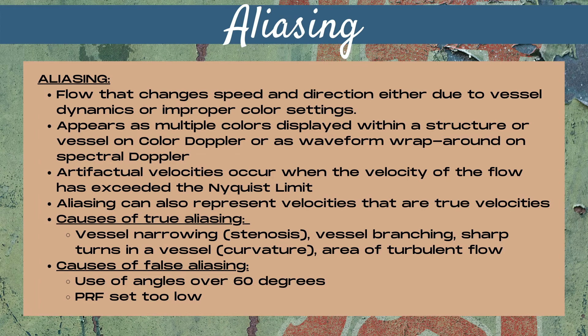Before we can talk about the PRF or scale control on an ultrasound machine, we first have to address aliasing and the Nyquist limit. Aliasing is flow that is changing speed and direction, and it's either going to be due to vessel dynamics or improper settings on the machine. With color doppler, this appears as multiple colors displayed within a structure or a vessel. On spectral doppler, this appears as the signal wraparound on a waveform.